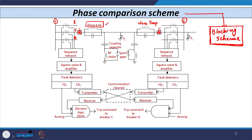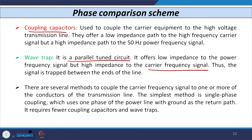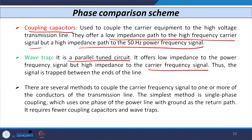A coupling capacitor also exists at both ends. Its working principle is exactly opposite to the wavetrap: it provides low impedance to the high-frequency carrier signal and high impedance to the fundamental 50 Hz frequency signal. So all carrier signals pass through the coupling capacitor to the associated equipment, while the 50 Hz power frequency signal is blocked.